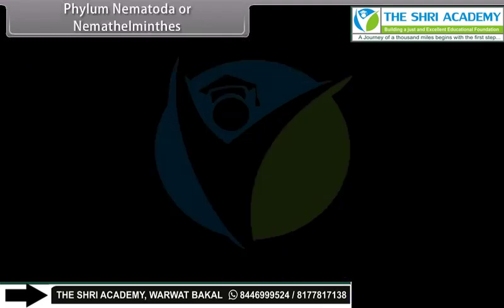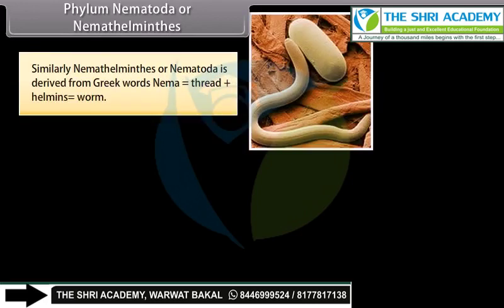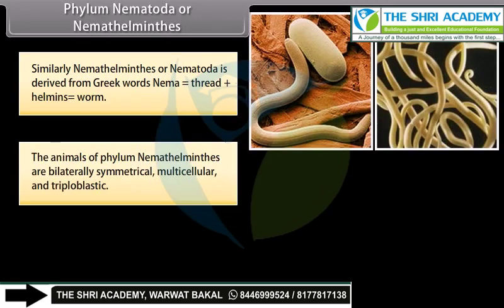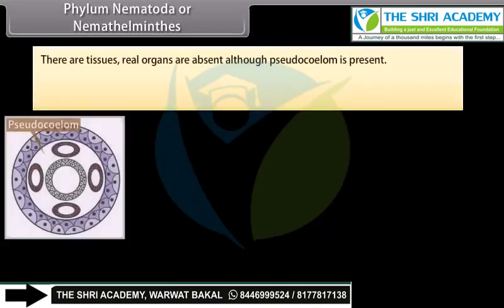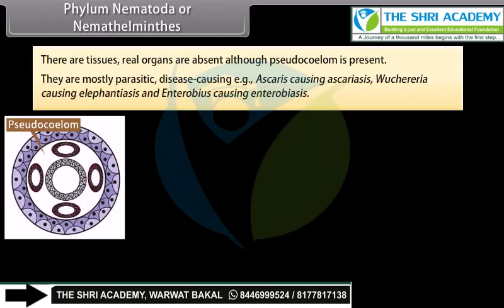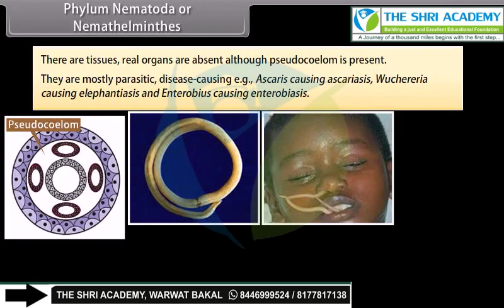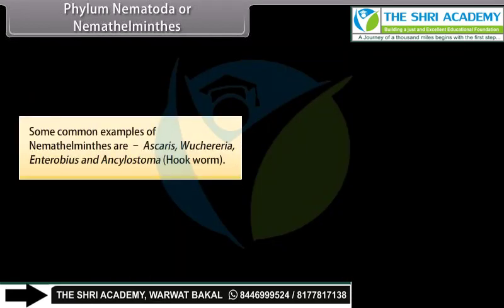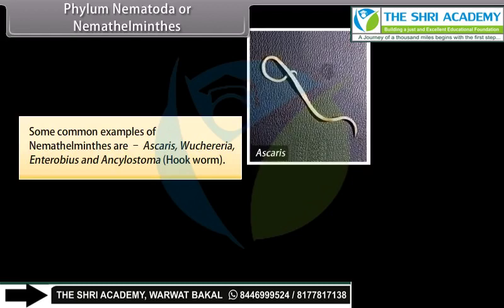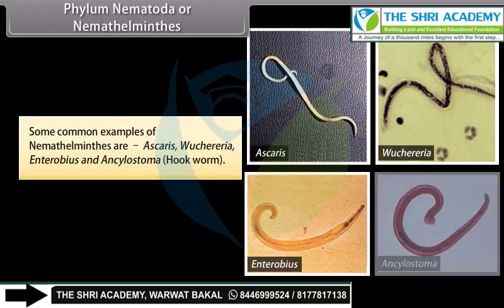Phylum Nematoda, or Nemathelminthes. Nemathelminthes, or Nematoda, is derived from Greek words: nema, meaning thread, plus helminthes, meaning worm. The animals of Phylum Nematoda are bilaterally symmetrical, multicellular, and triploblastic. Their body is cylindrical, tapering towards ends. There are tissues but true organs are absent, although a pseudocoelom is present. They are mostly parasitic and disease-causing, e.g. Ascaris causing Ascariasis, Wuchereria causing Elephantiasis, and Enterobius causing Enterobiasis. Common examples are Ascaris, Wuchereria, Enterobius, and Ancylostoma (hookworm).